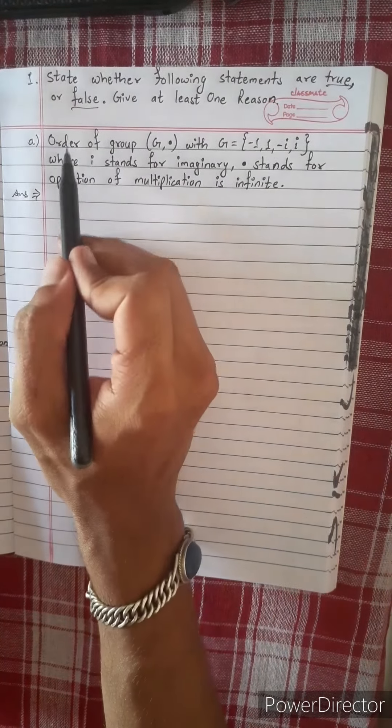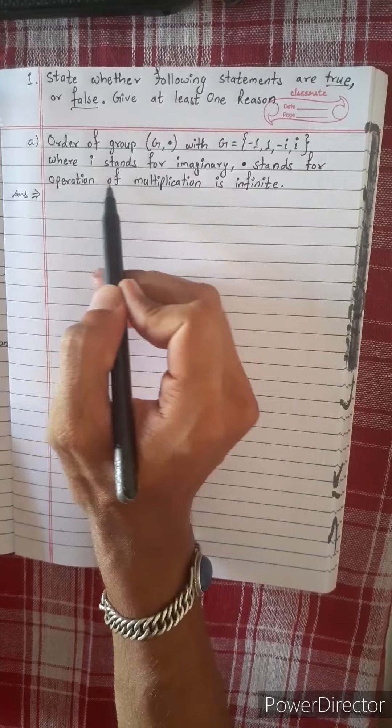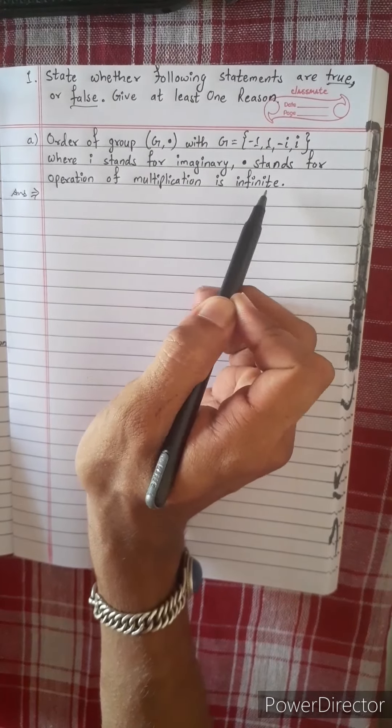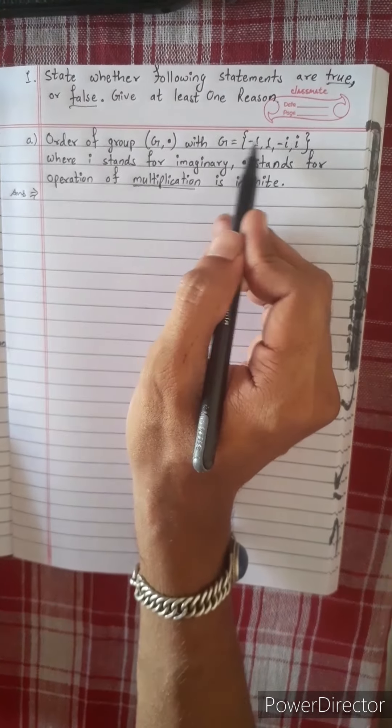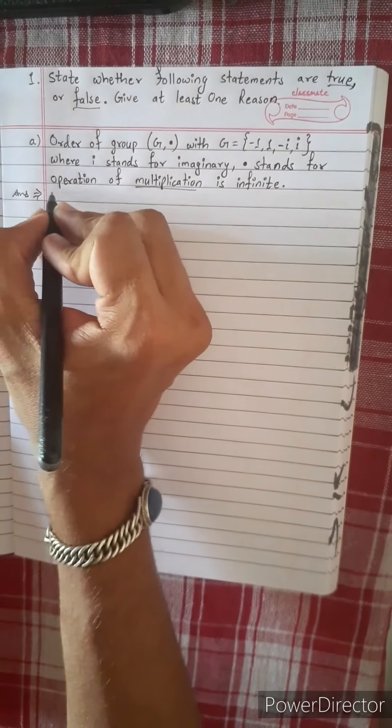True or false, you can give your answer. Question for number 3. It's infinite. To multiply it, to multiply it is infinite, that's a finite number. You can give it as false.